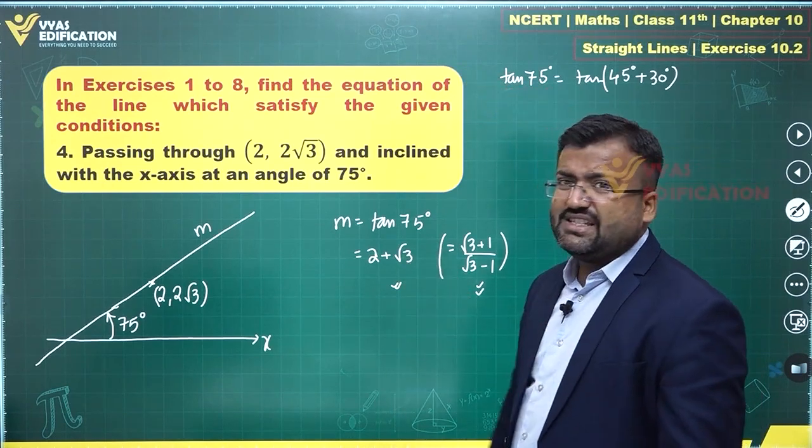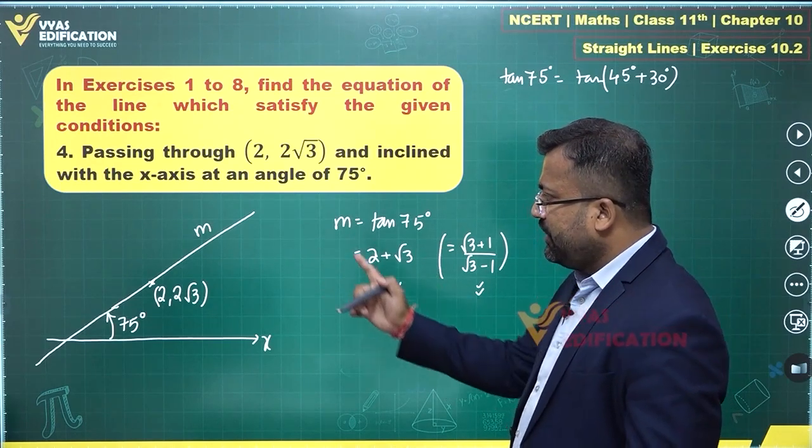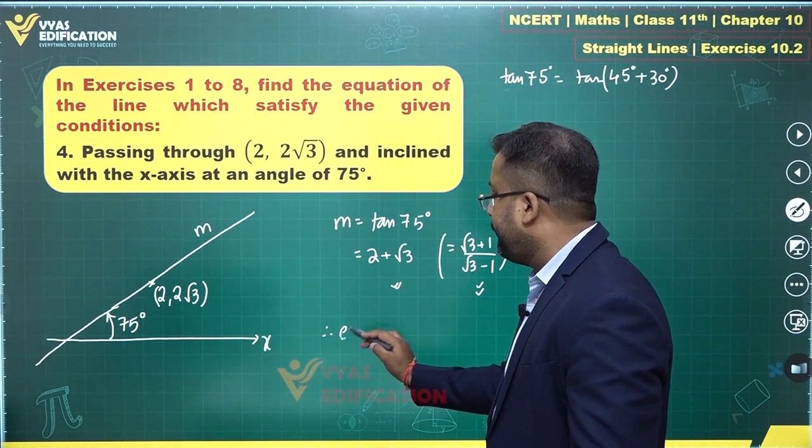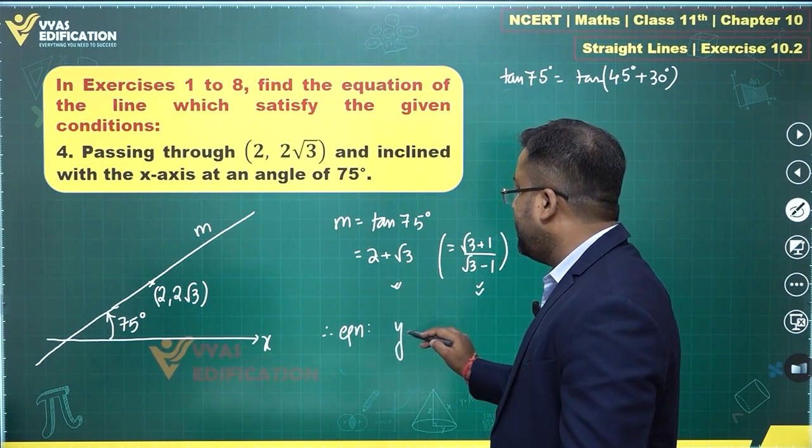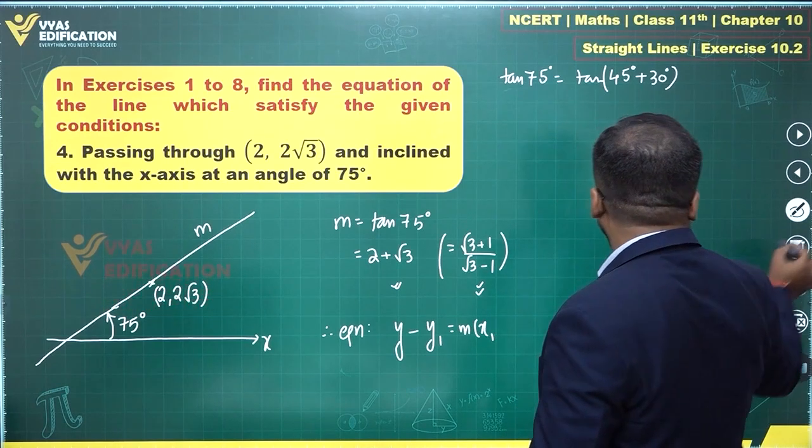This is the value of tan 75 degree. What else? You found the slope, you are given a point, so you can apply the point-slope form. Therefore, equation y minus y1 is equal to m times x minus x1 is the form.